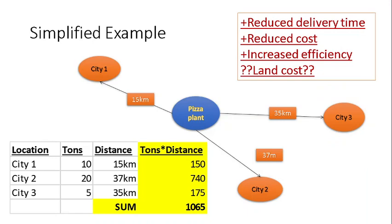As you can imagine here, we have a reduced delivery time because we have placed our plant somewhere between those three cities. So the distances are substantially smaller than before. So we achieve reduced delivery time, we achieve reduced cost, and of course we increase our efficiency.